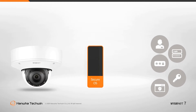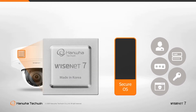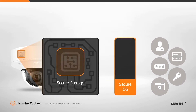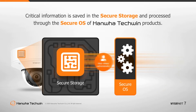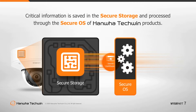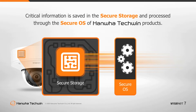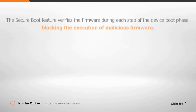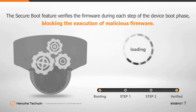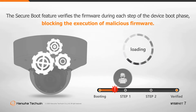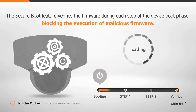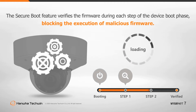Hanwha Techwin's Wisenet 7 chipsets contain Hanwha Techwin's own embedded security platform module, the Hanwha Trusted Platform Module. Critical information is saved in the secure storage of the chipset and processed through the secure operating system. Additionally, the Secure Boot feature verifies the firmware during each step of the device boot phase, blocking the execution of malicious firmware once infected.